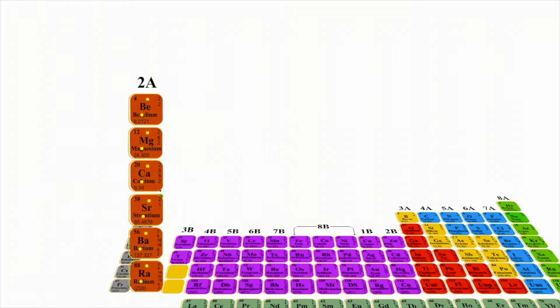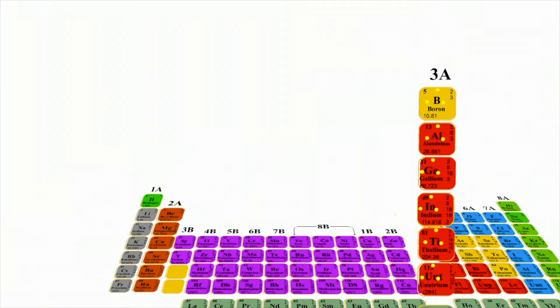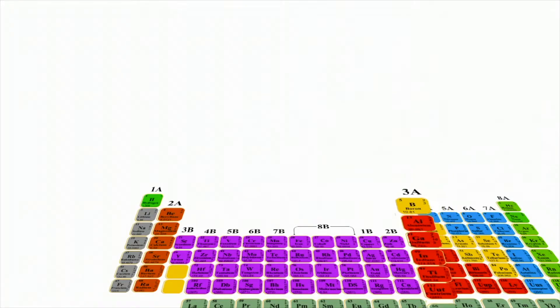Elements in group 2A, including magnesium, have two. Elements in group 3A have three. Elements in group 4A have four.